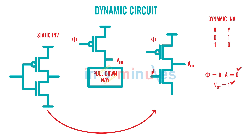Now see what happens if phi equals 0 and A equals 1. The PMOS is on because phi is 0, and the NMOS is on because A is 1. This is the same problem we face in zero-NMOS circuits or ratioed logic circuits — there is again a fight between pullup and pulldown. We want to avoid this problem.